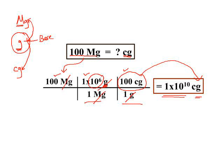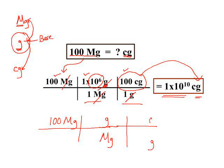You also could set this problem up a different way. You could start with 100 megagrams. Now, let's look at the logic. We know that the unit down here has to be megagram. We're going to the base unit, gram, and then we're going from the base unit, gram, to centigram. So we know the units have to be set up this way in order to cancel.